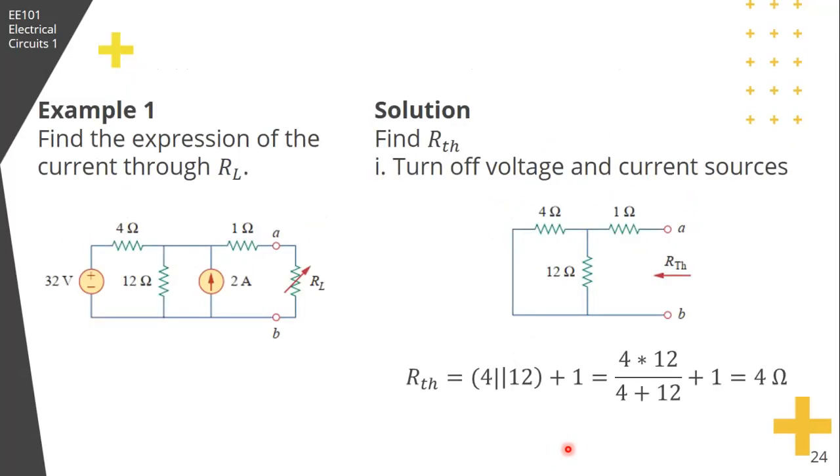Let's do an example. Find the expression of the current through RL. This is a variable resistor. First, let's find RTH. To find RTH, we kill all the independent sources. If you kill the voltage source, it becomes a short. If you kill this current source, it becomes open. Now the equivalent resistance as seen from terminals AB is 4 parallel 12 plus 1. So RTH is equal to 4 ohms.